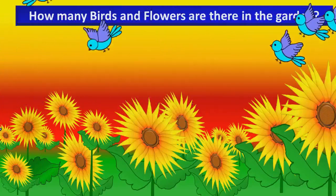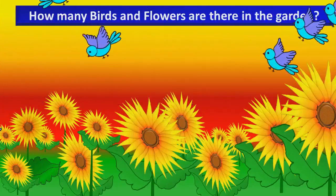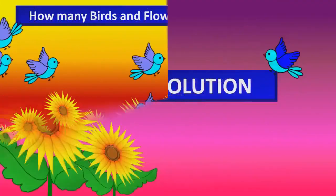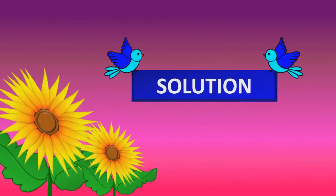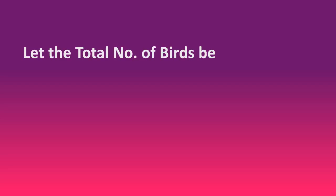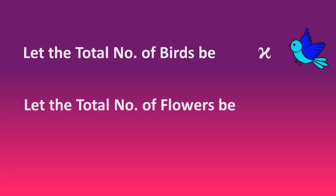Think for a while. Now, the solution is: let the total number of birds be X and the total number of flowers be Y.